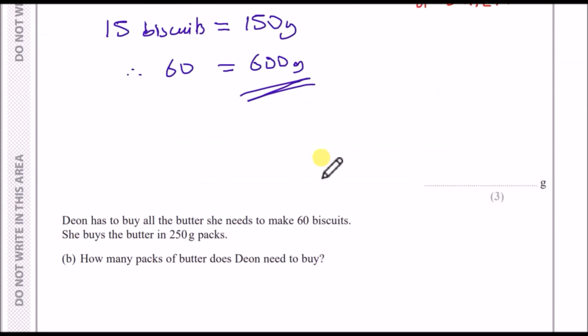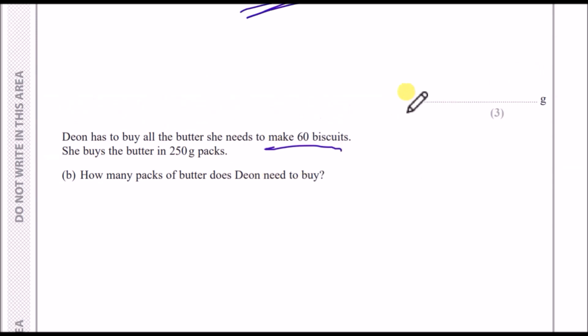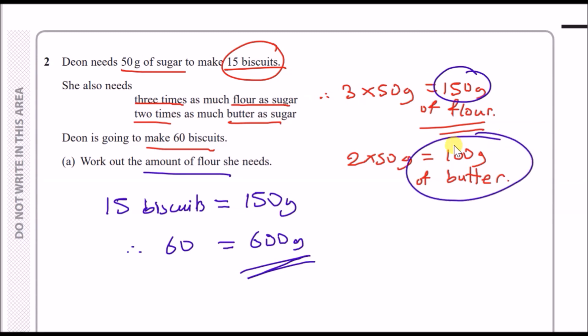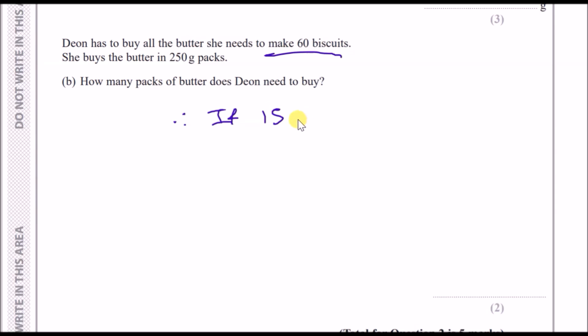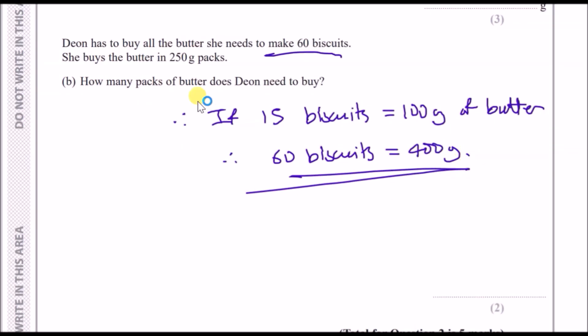Dean has to buy all the butter she needs to make 60 biscuits, and she buys the butter in 250 gram packs. According to the information, she needed 100 grams of butter to make 15 biscuits. If 15 biscuits equals 100 grams of butter, then to make 60 this is four times as much, so 4 × 100 is 400 grams. Because each pack is 250 grams, she will need to buy two packs to make 500 grams which will cover the 400 grams.